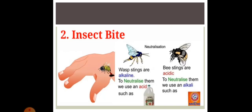Second is insect bites. Wasp stings are alkaline, that is basic in nature. So to neutralize them, we use acids like lemon juice, vinegar, etc. While bee stings are acidic in nature, and to neutralize them, we use an alkali or a base like baking soda. We can also use calamine.